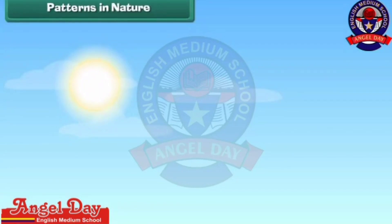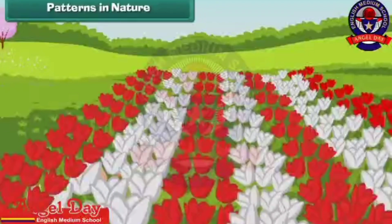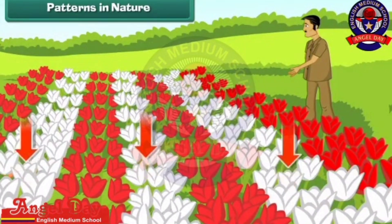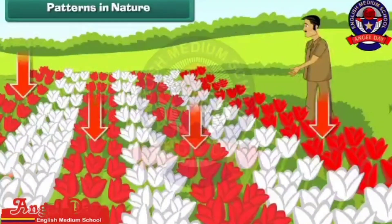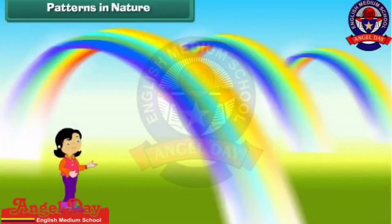Patterns in nature. Look around and you will find many patterns in nature. Look at this rose garden. The gardener has planted the roses to form a pattern. Here, a white rose follows a pair of red roses. Look at rainbows — the order of colours in every rainbow is the same.